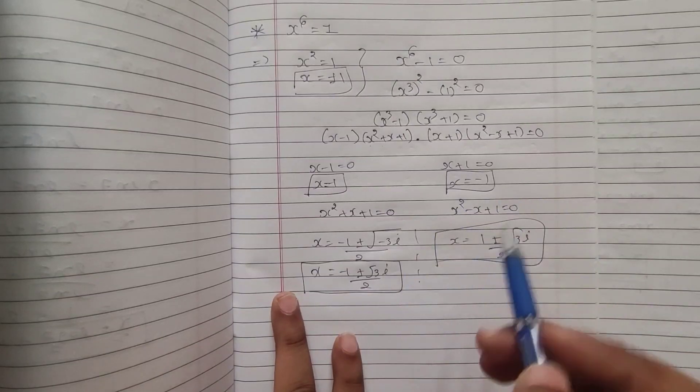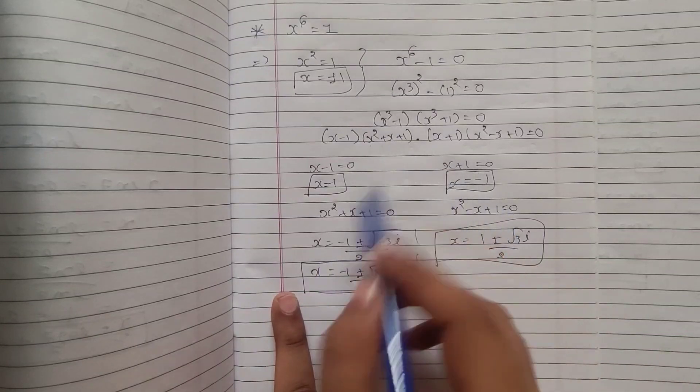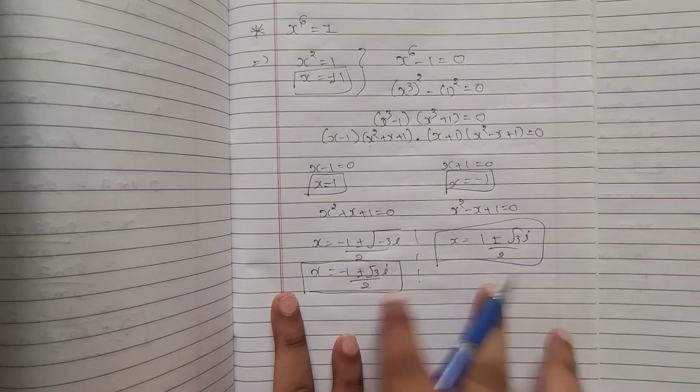So, by this method, we will get six different values for x, right. So, this six values will be our answer. We will get real values also and we will get complex values also.